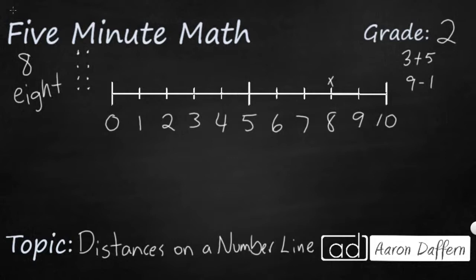So I'm going to start from zero. I'm just going to make some hops. One, two, three, four, five, six, seven, eight. Now, this right here represents the number eight because I made eight hops. And my distance from zero to eight is eight.